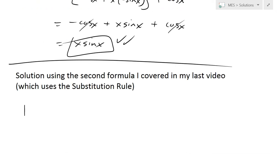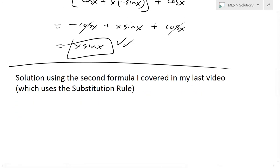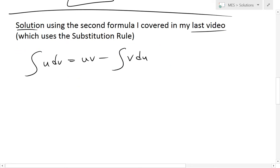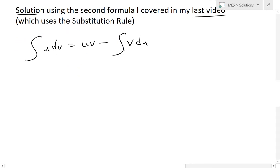Now I'm going to solve this exact same problem using the second formula I covered in my last video, which uses the substitution rule. That basically has the formula u dv, and this is just an easier one to memorize. Now you have uv minus integral of v du. The reason I want to cover this one is because it's easier to do, much simpler. You could just write u and v.